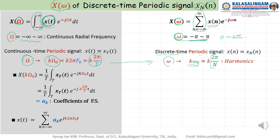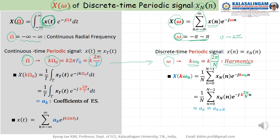Omega_0 equals 2·pi over N, as explained on the previous slide — this is harmonics. From the formula, we substitute k·omega_0 in place of omega. The summation range for a periodic signal covers one period: n equals zero to N minus one. We integrate over one period. Finally, we can get the Fourier transform for discrete time periodic signals — the Discrete Fourier Transform.